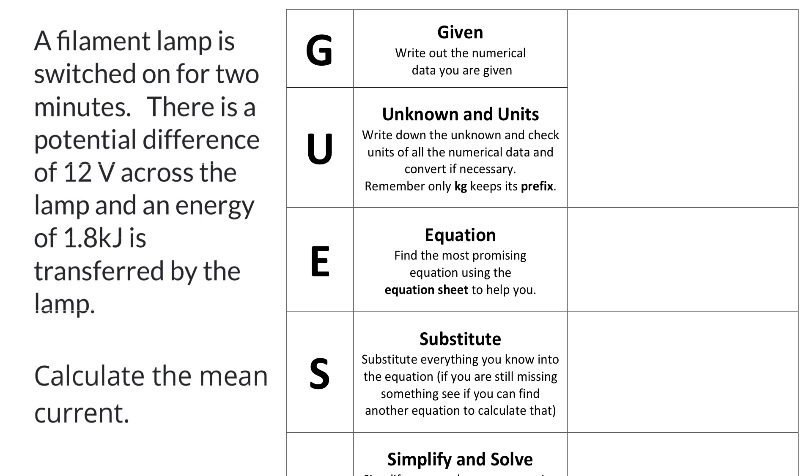The first step is to write out all the information which you're given, which in this case is that the time is two minutes, the potential difference is 12 volts, and the energy is 1.8 kilojoules. Next I should write out what I'm asked to calculate, or the unknown, which in this case is the current.